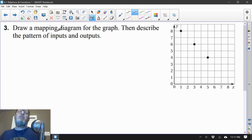Moving on, number 3. Draw a mapping diagram for the graph. So we have our graph, we have our three points here, and then describe the pattern of inputs and outputs. I'll show you how that works in a minute.